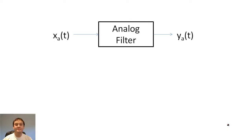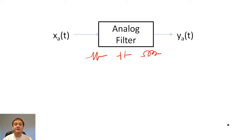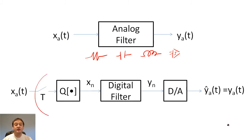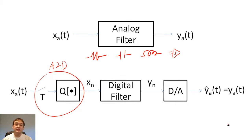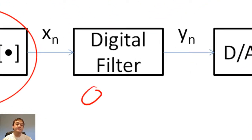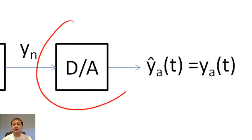In this lecture, I will discuss the basics of digital filters. In analog signal processing, we created filters from resistors, capacitors, inductors, and op-amps. In digital signal processing, we create filters with an analog-to-digital converter, a digital filter composed of registers, delay units, multipliers, and adders, and a digital-to-analog converter.